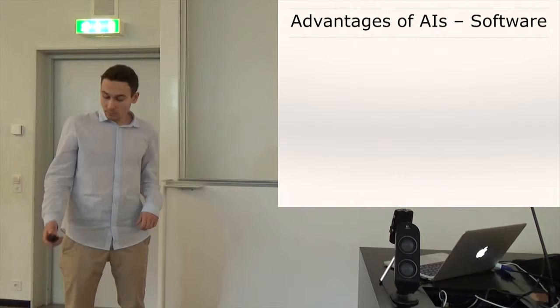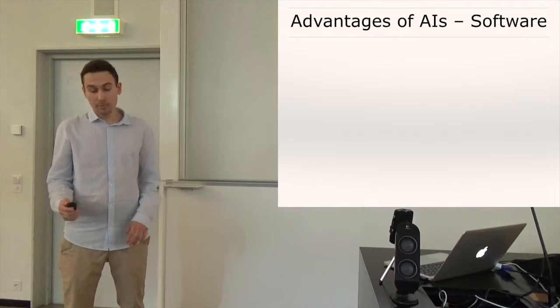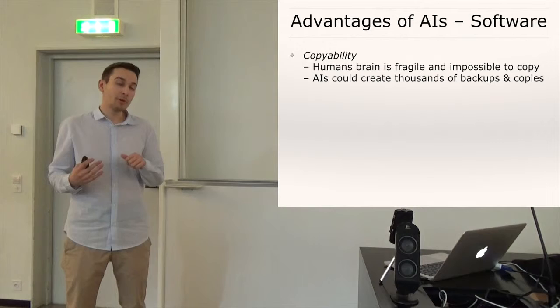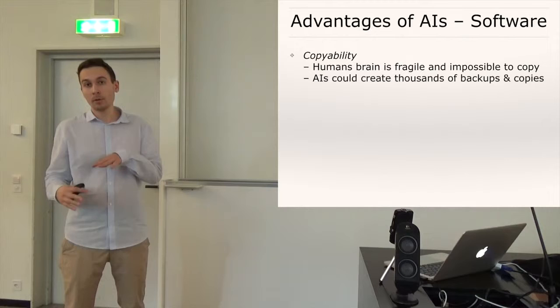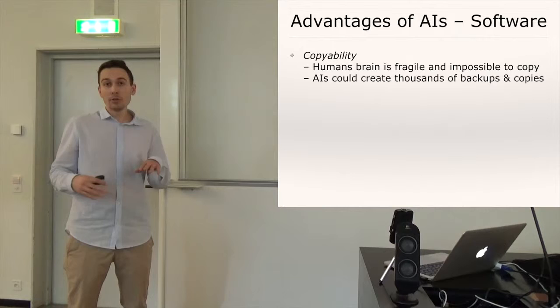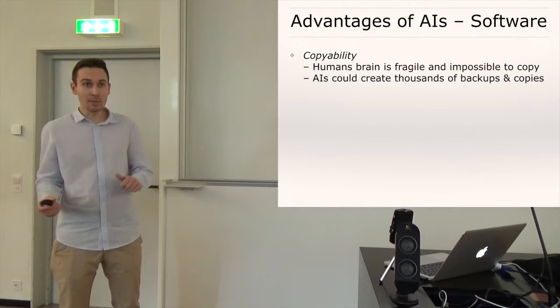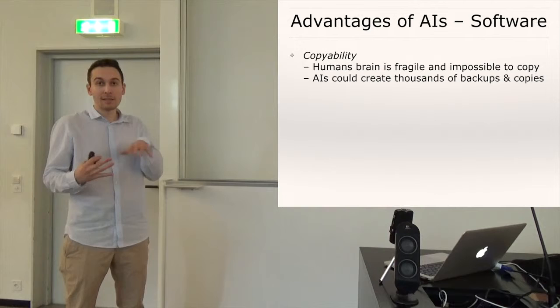So then there are also many software advantages of AIs and I just use one, for example copyability. If you're a human then you can't just copy your brain but AIs can quite easily, if the hardware costs are not too high, can quite easily create thousands upon thousands of backups and copies and for example distribute them all over the internet and then in many different servers which almost makes them immortal in a sense. And they would have many many identical copies with the same goal. So it would be much more powerful.